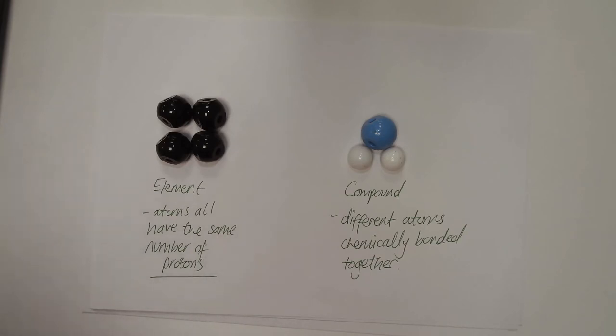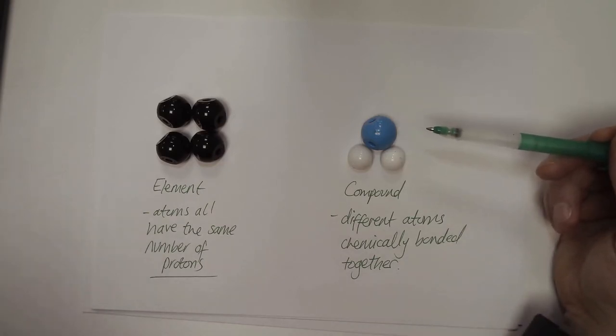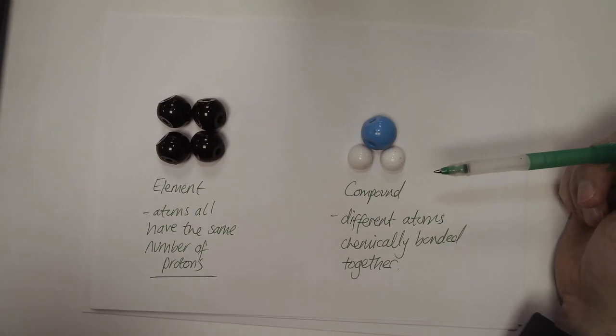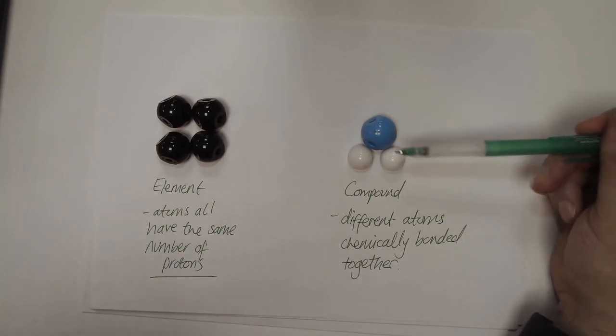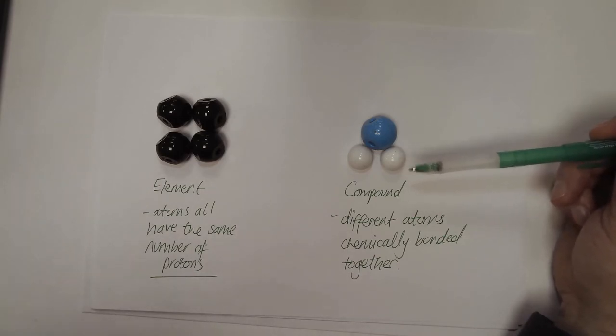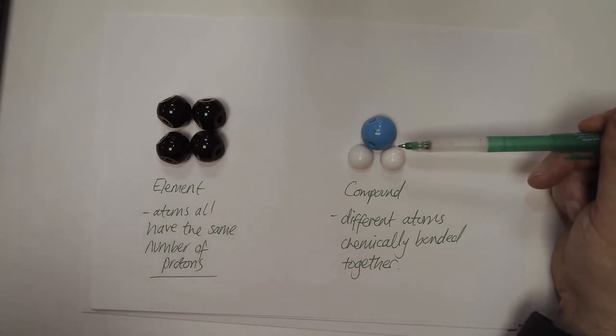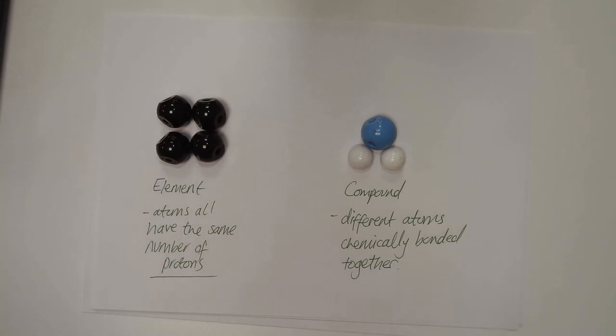A compound has different atoms that are chemically bonded together. Now within this representation I've just used different colored molymods, blue and white ones, just to represent that they are different atoms. We have two of the white ones that are bonded to one of the blue ones. Chemically bonded different atoms, that's our compounds. Now a compound we don't find on the periodic table.